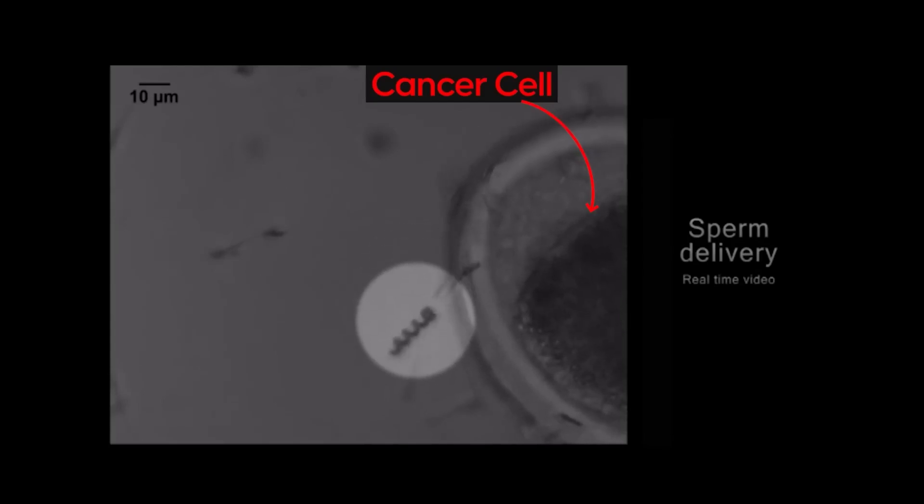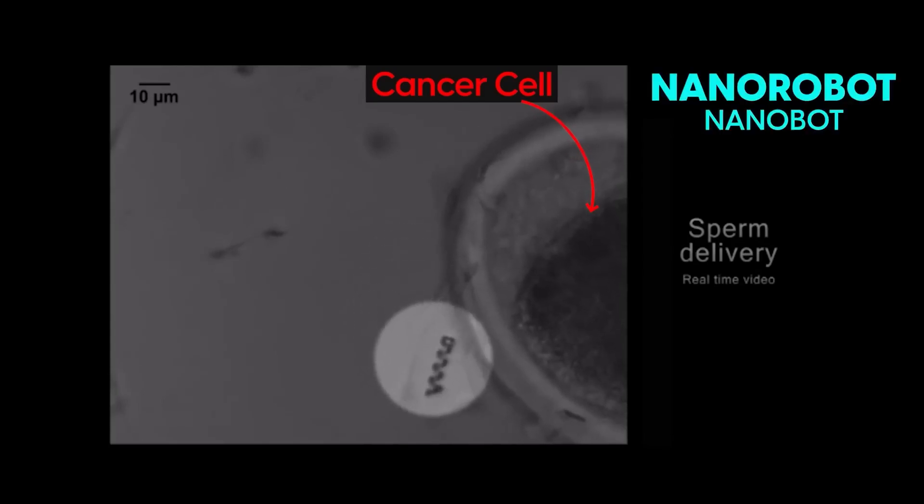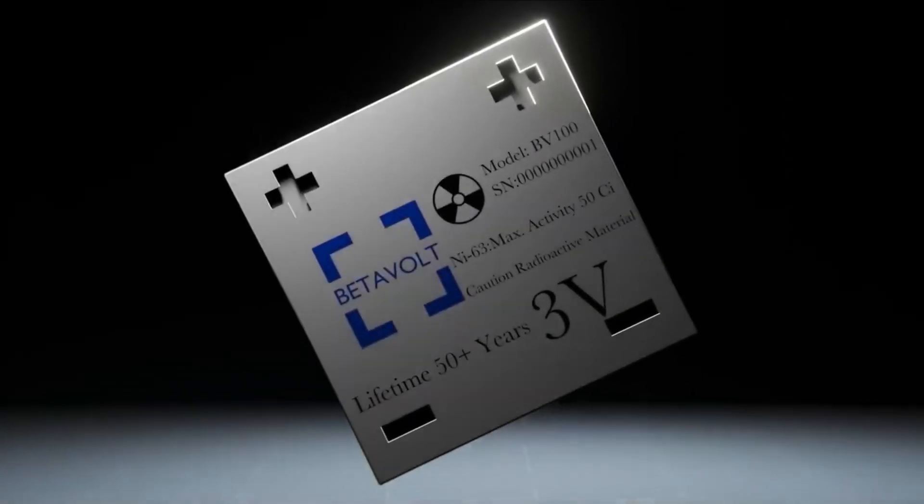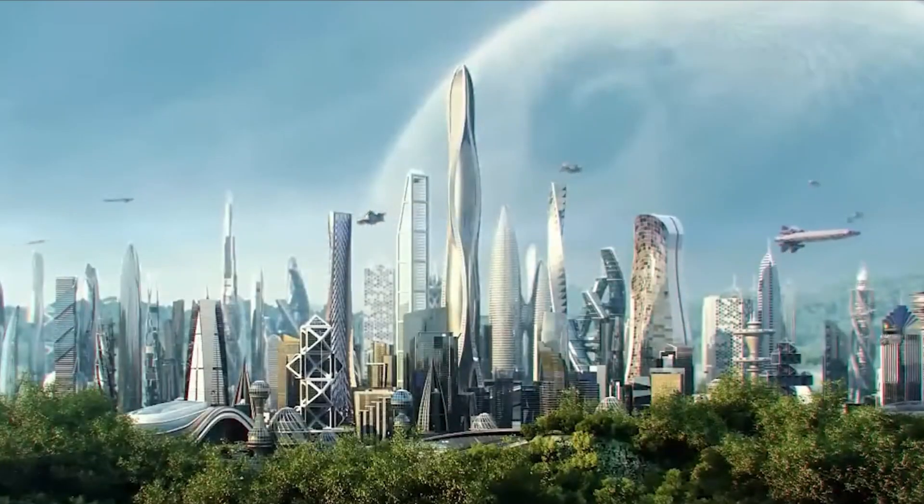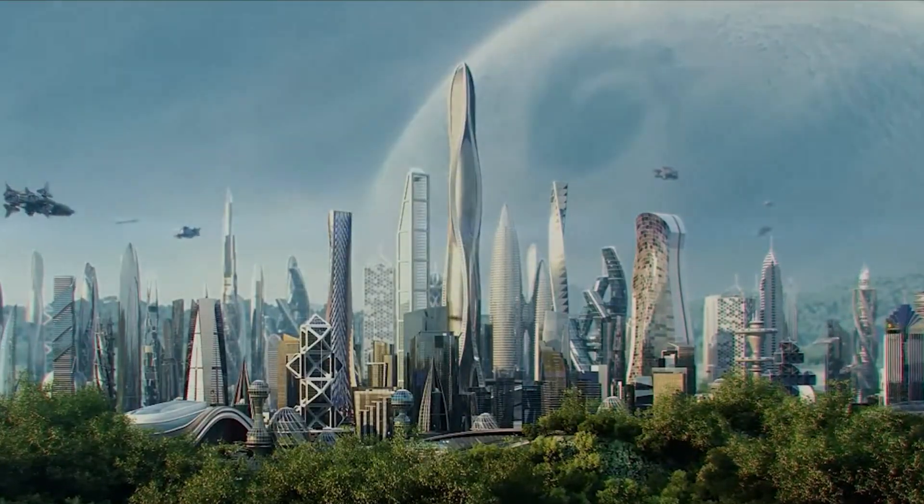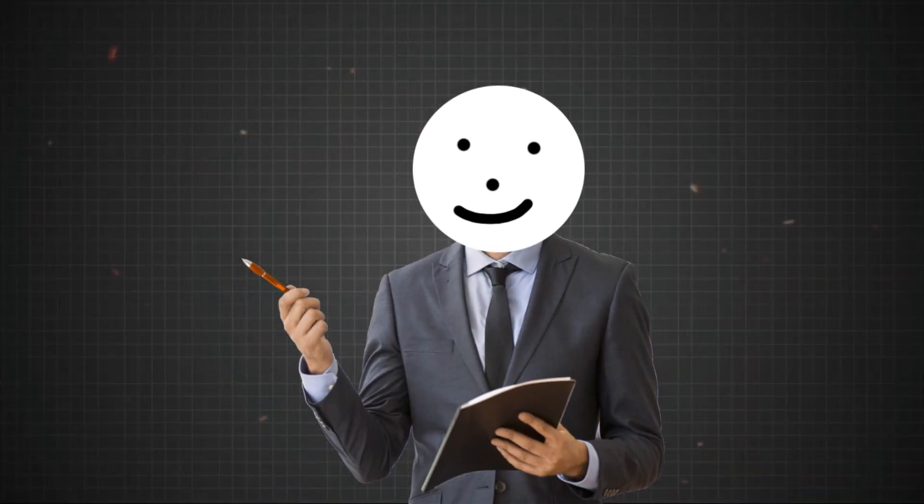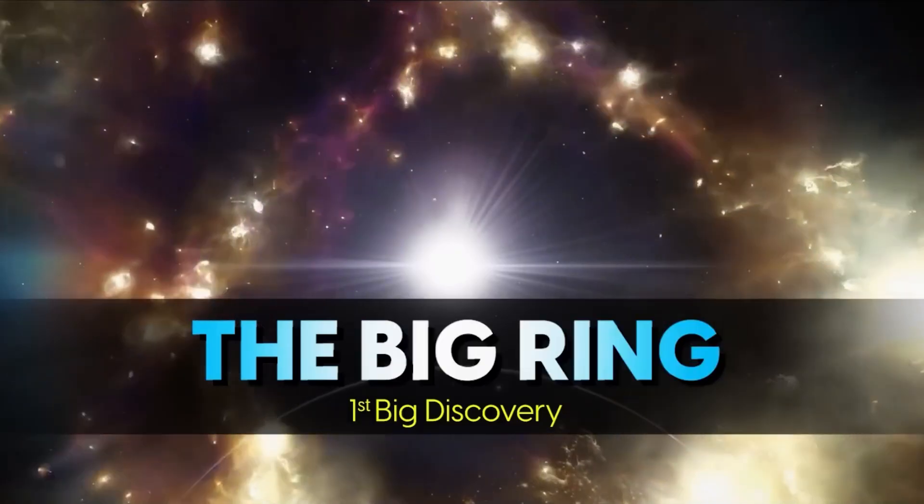It is a tiny robot, a nanorobot or nanobot, that scientists have created to target and destroy cancerous cells. You will find out in just a few minutes exactly how scientists are doing this, and it is going to blow your mind. So let's start with first big discovery, the Big Ring.